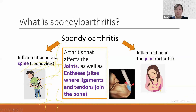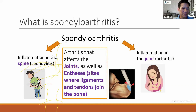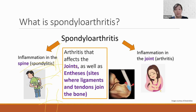Spondyloarthritis is a family of arthritis-associated diseases. The arthritis can affect joints as well as the entheses, which are the sites where ligaments and tendons join to the bone.